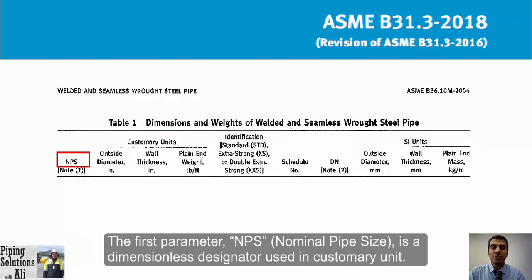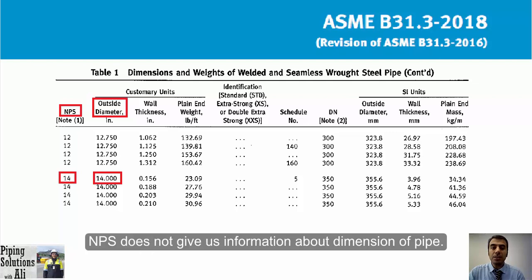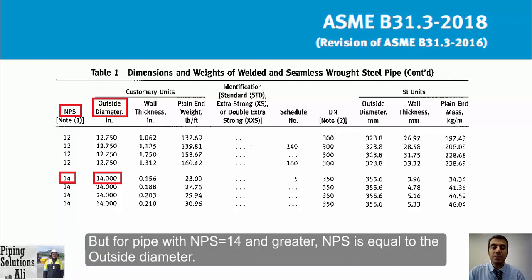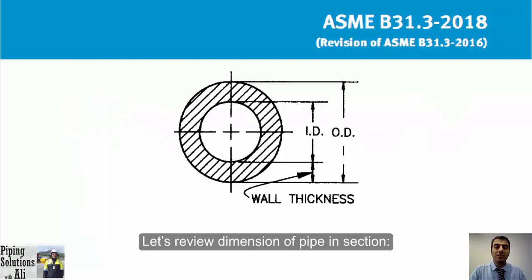The first parameter, NPS (Nominal Pipe Size), is a dimensionless designator used in customary units. Below NPS 14, NPS does not directly give dimensional information. For example, for NPS 6 we must refer to ASME B36.10 to find pipe dimensions. However, for NPS 14 and greater, NPS equals the outside diameter — so a pipe with NPS 20 has an outside diameter of 20 inches.